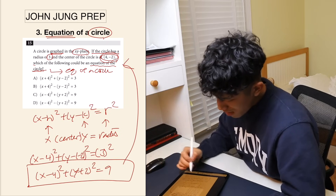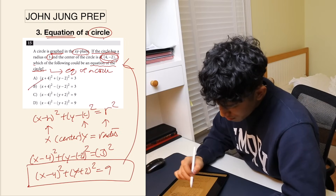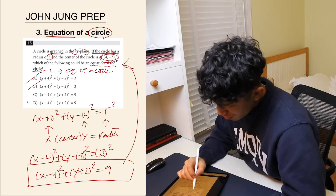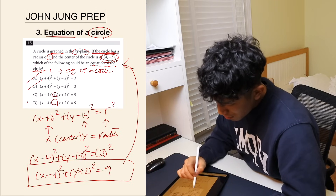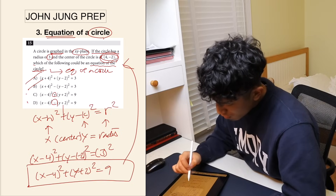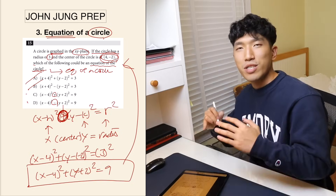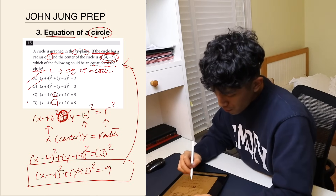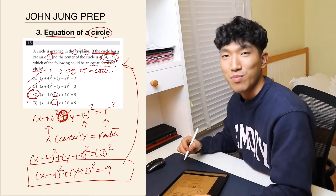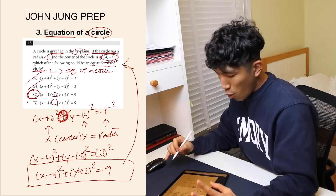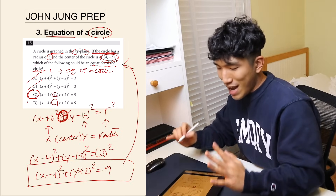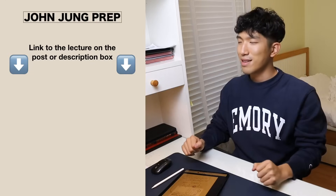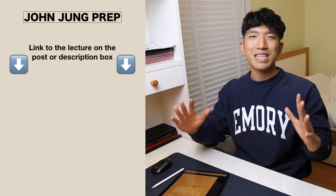Which answer matches? It needs minus 4 and plus 2. Two choices have minus 4, but the difference is the middle sign. The standard form always has a plus in the middle — otherwise the equation doesn't work. So we pick choice C. Those are the three types you need to know for SAT circles: arc length and sector area, circle characteristics, and equation of a circle. Know these three and you'll very likely get every circle question right.